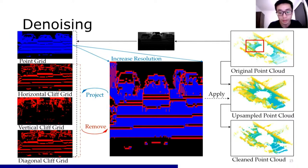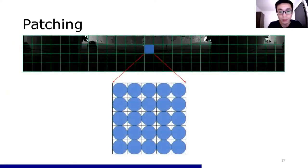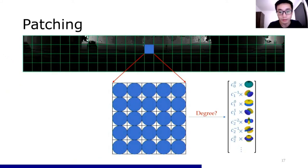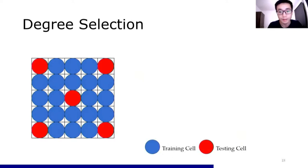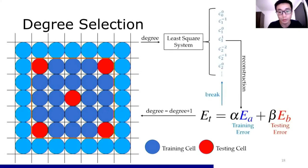We apply this mask to the noisy point cloud to clean it. The next step is extracting spherical harmonic coefficients. To reduce computation costs, we divide the entire upsampled depth image into many patches. For suitable degree selection: a higher degree gives better reconstruction for existing points; however, overfitting can occur if the degree is too high for unknown regions. So we select diagonal pixels as testing cells and the rest as training cells, extending training cells to cover gaps between neighbor patches, then iteratively increase the degree to find the lowest error for both training and testing cells.